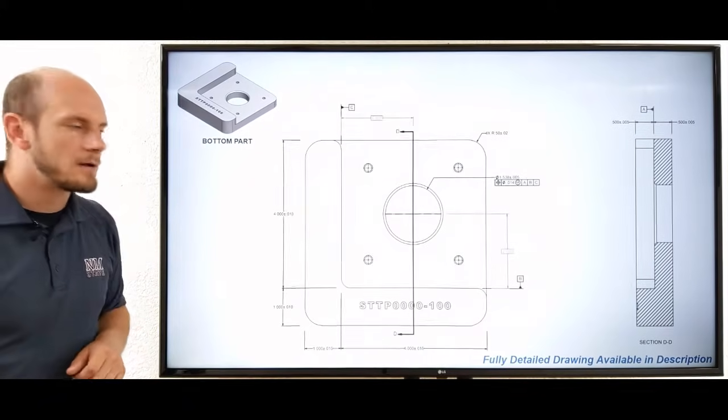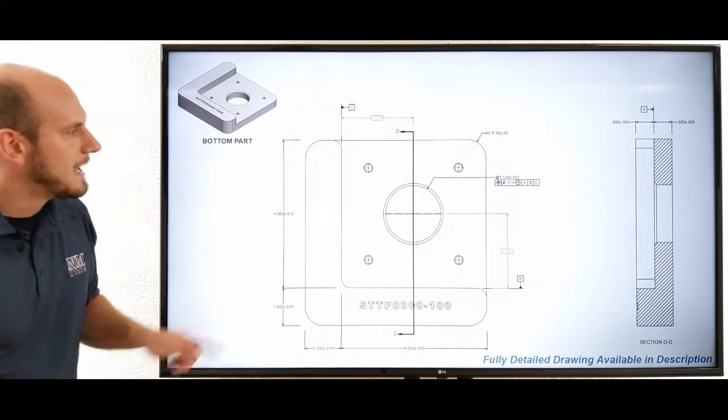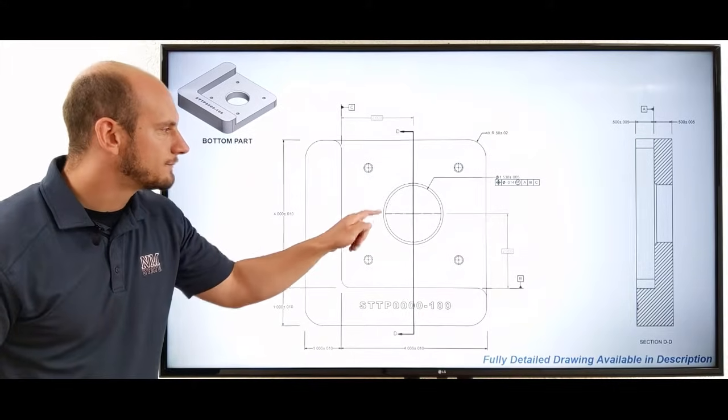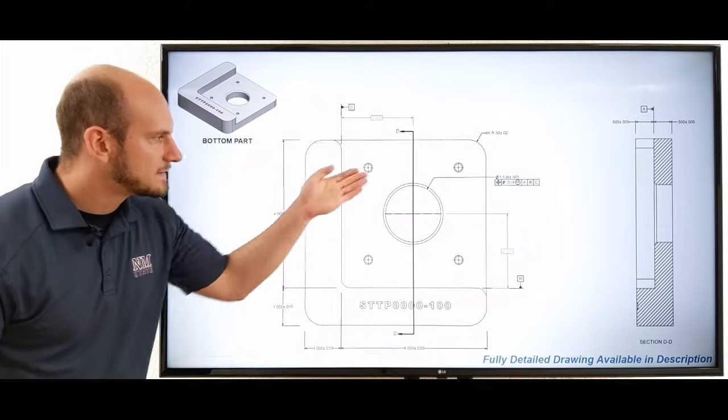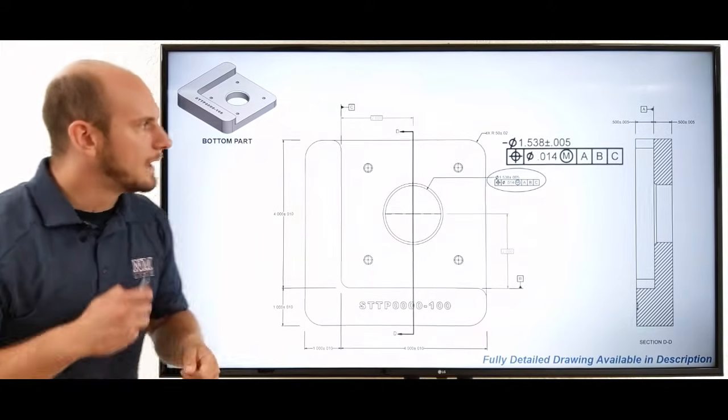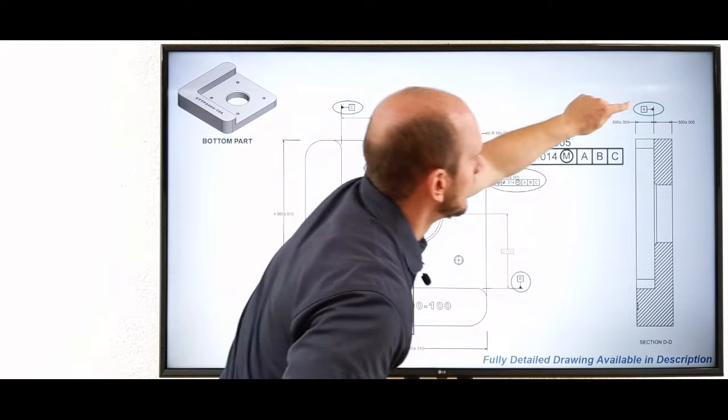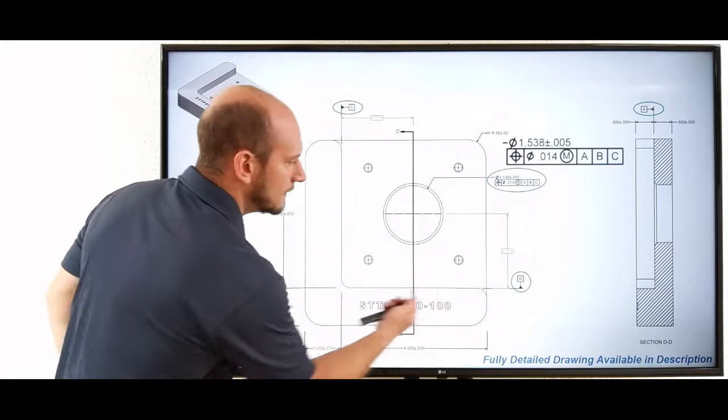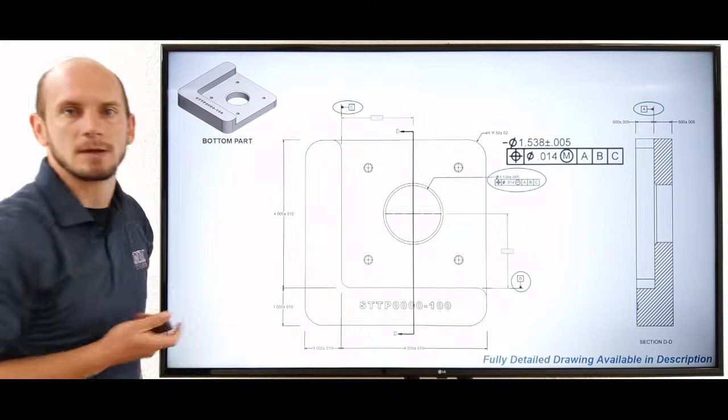All right, really quickly, let's look at the bottom part. Same thing here, guys. I've got that critical assembly feature, which is that bore. And because it's a critical assembly feature, I'm applying GD&T to it. Again, I'm also identifying those interface or mating surfaces on my drawing as well.